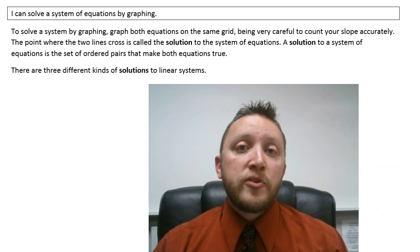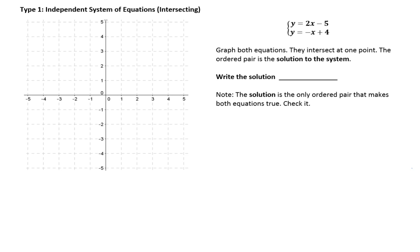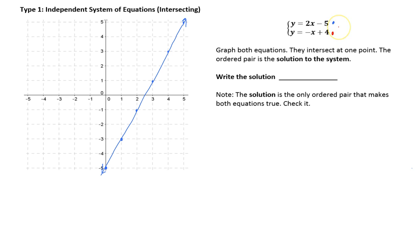Let's look at our first example where the system is y equals 2x minus 5 and y equals negative x plus 4. Both of these are in slope-intercept form. I'll graph the first one in blue: the y-intercept is at negative 5 and the slope is 2, so from that point we go up 2 over 1. We want plenty of points to ensure our two lines will intersect. Now the other graph I'll do in red — it has a y-intercept of positive 4 and a slope of negative 1, so we go down 1 to the right 1.